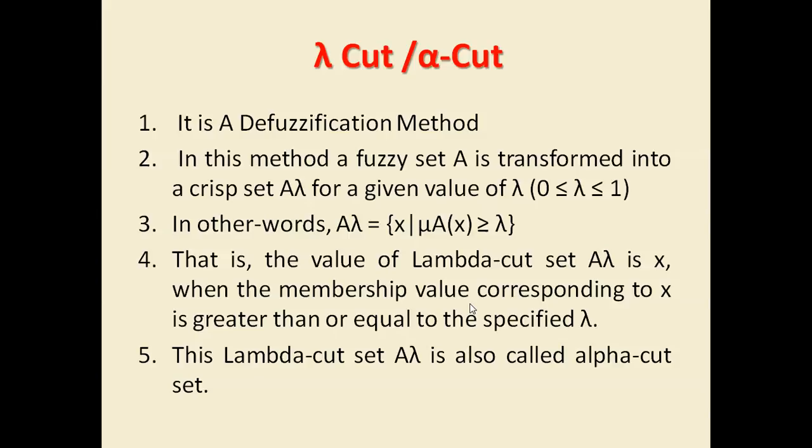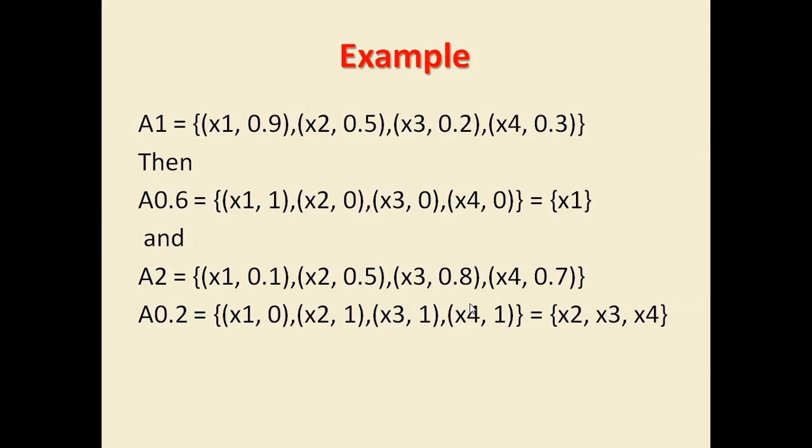Now let's see an example. We have a set A1 that is having some specific elements in it: x1, x2, x3, x4 with specific values 0.9, 0.5, 0.2, and 0.3. As per the definition, if we want to convert this fuzzy set into crisp set using alpha cut method, we will find all the elements who are having membership value greater than or equal to the alpha value.